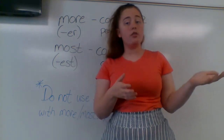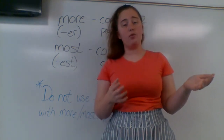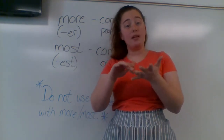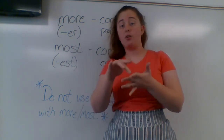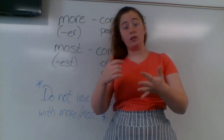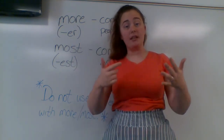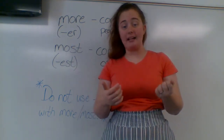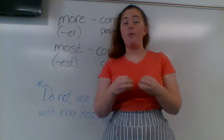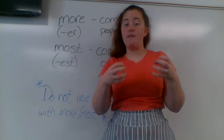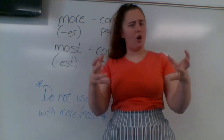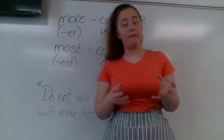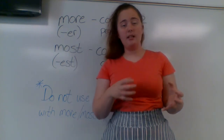In language class, a hard and fast rule is that am, is, are, was, were, be, being, been, have, has, had — are always going to be verbs. Any of those words are always going to be verbs because they're on my helping verb list. So that's a hard and fast rule; it's always going to be the case.